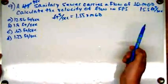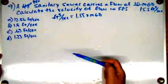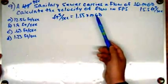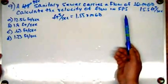Now the problem's a little easier to read. A 4 foot sewer carries a flow of 15.5 cubic feet per second. Calculate the velocity and flow in feet per second.